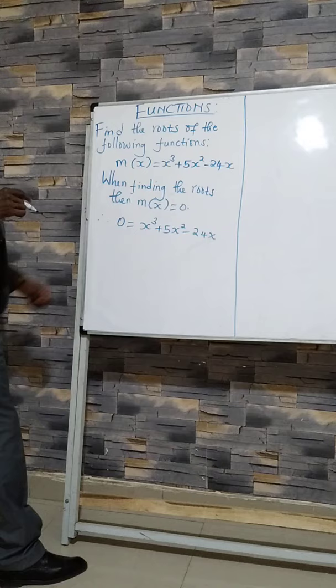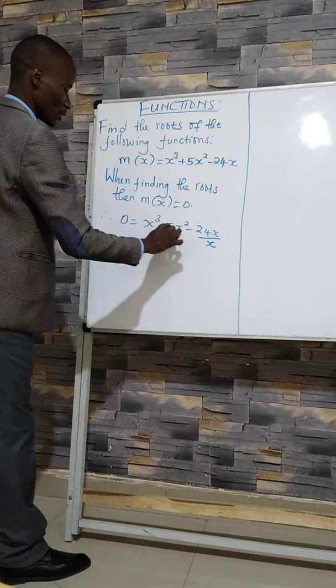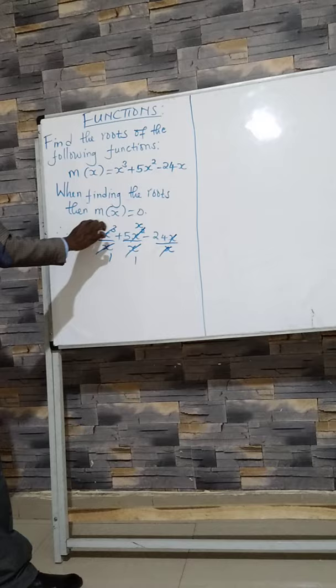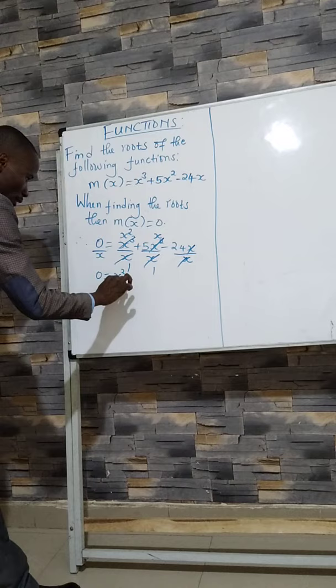We need to make this a quadratic equation. x is common, so we divide through the equation by x. We divide each member of the equation by x. Our new equation is 0 = x² + 5x - 24.